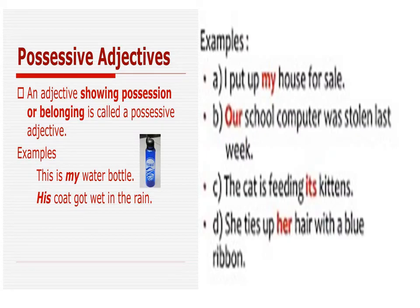Let's look at possessive adjective. An adjective showing position or belonging is called a possessive adjective. For example: This is my water bottle — the water bottle belongs only to me. His coat got wet in the rain — whose coat? His coat, only his coat. So possessive adjective means position or belonging to someone in a sentence.